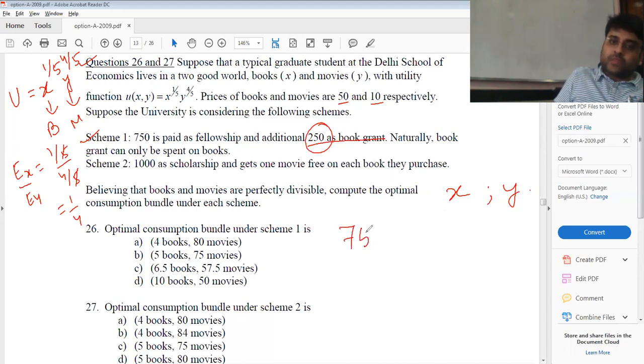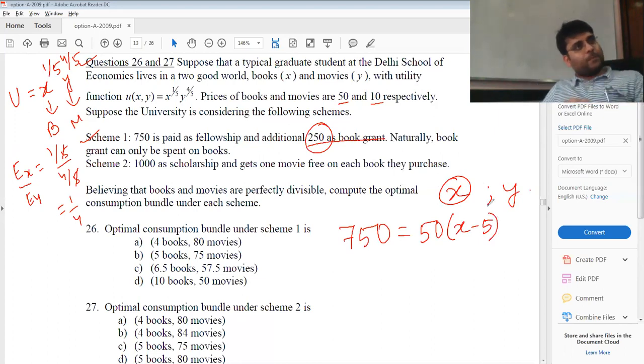The remaining 750 has to be spent on, if X is the number of books bought, how many books will be bought out of the 750? X minus 5 books. Supposing my book consumption is 7, 5 books I have already bought from the book grant. How many more books am I buying from the scholarship? Only 2 more books. So X minus 5, where X is equal to the entire consumption of books.